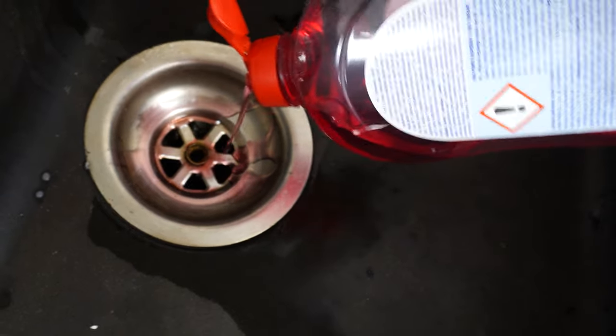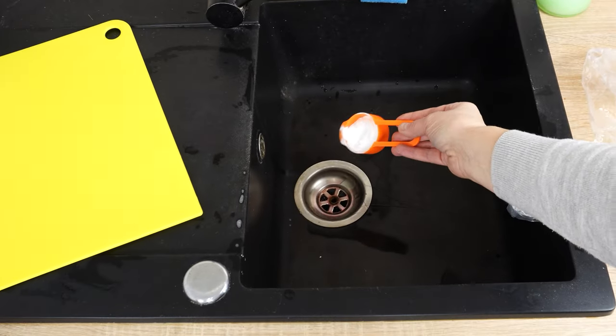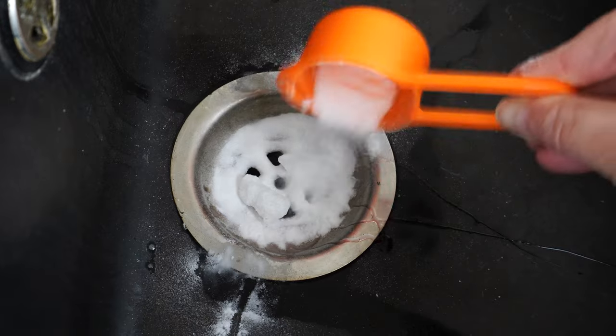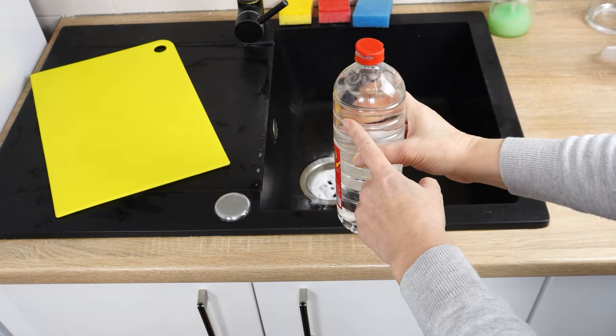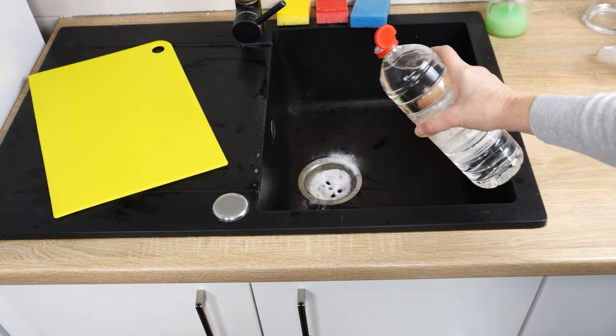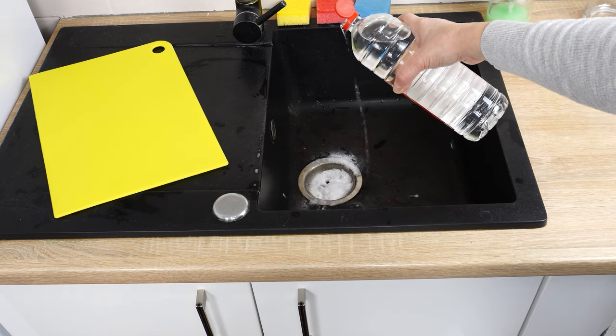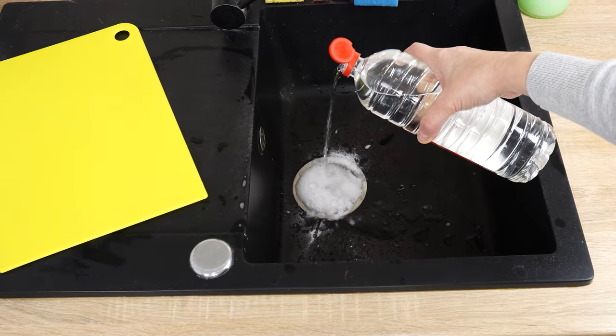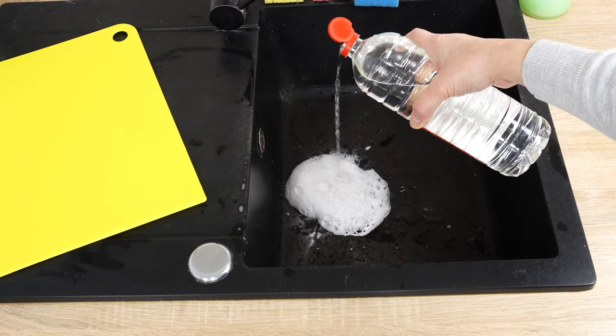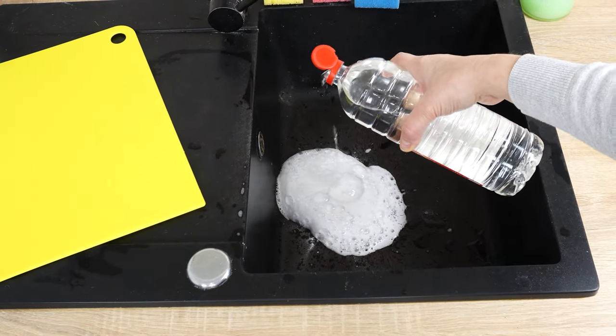Now we'll use a secret white powder. Pour about four tablespoons into the sink. Time for the third ingredient. It's vinegar. Just pour about 200 milliliters into the drain. Immediately, a reaction will occur between the vinegar and the white powder, and foam will quickly start to form. You probably already guessed that the white powder was baking soda.